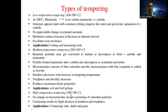The third type is high temperature tempering, with a temperature range of 500 to 700°C. There is no change in the microstructure except coarsening of cementite particles. Coarsening results in a slight decrease in hardness and toughness of the steel. The applications include connecting rods, shafts, and gears. So these are the three types of tempering: low temperature, medium temperature, and high temperature tempering.